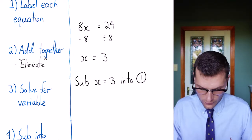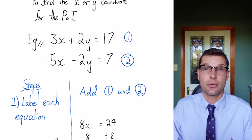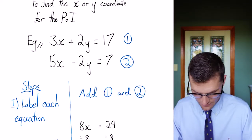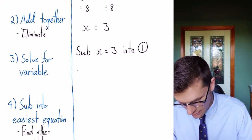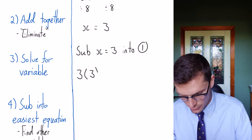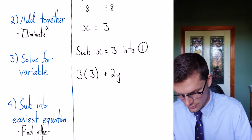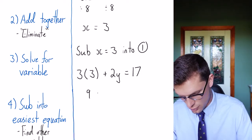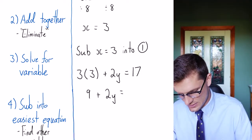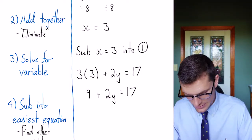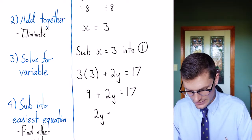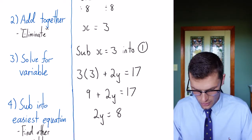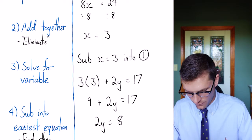So all we've got to do there is I've got 3x plus 2y is equal to 17. So that becomes 3 bracket 3 plus 2y is equal to 17. 3 times 3 is 9. So I've got 9 plus 2y is equal to 17. Minus 9 from both sides. 2y is equal to 8. Divide by 2, y is equal to 4.